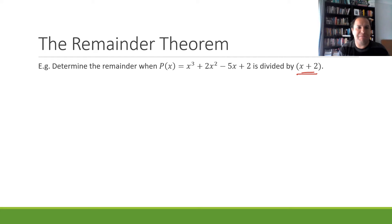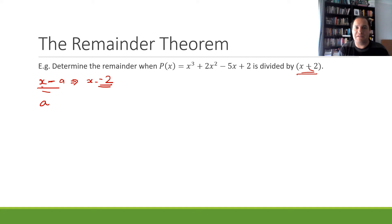Here, remember our factor is of the form x minus a. So in this situation our a value is not positive 2 — our a value is negative 2, because x subtract negative 2 gives us x plus 2. Because of that minus sign in front of a in our divisor, the sign of a in the brackets is actually the opposite, so it is negative 2.